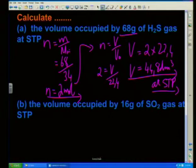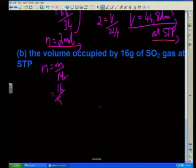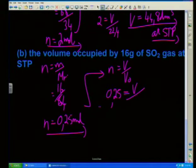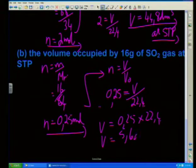Let's have a look at the very last question: the volume occupied by 16 grams of SO2. We use our standard equation: 16 over 64 - SO2 works out to be 64 grams per mole - giving 0.25 mol. Plugging back into our equation: 0.25 equals V divided by 22.4. Therefore V works out to be 0.25 multiplied by 22.4, and the volume comes out to be 5.6 cubic decimetres at STP.